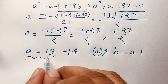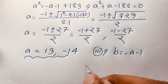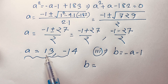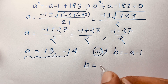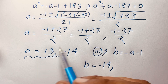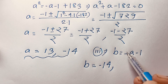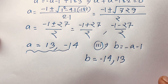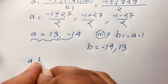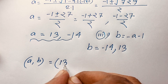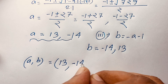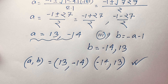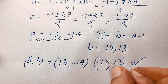Now finding the values of b: when a equals 13, then b equals minus 13 minus 1, which is minus 14. And when a equals minus 14, then b equals minus (minus 14) minus 1, which is 14 minus 1 equals positive 13. So our final answers are: when a equals 13, b equals minus 14; and when a equals minus 14, b equals positive 13. This is the solution to this math Olympiad question.